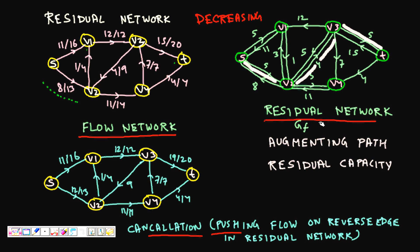In the residual graph, we find an augmenting path — a path from s to t. One example (shown in pink) is: s → v2 → v3 → t, with capacities 5, 4, and 5 respectively. The bottleneck is 4, so the residual capacity of this path is the minimum of all edge capacities along the path, which is 4.